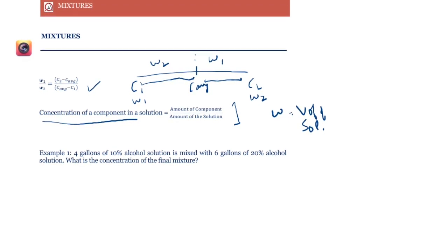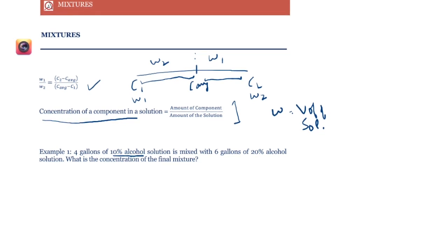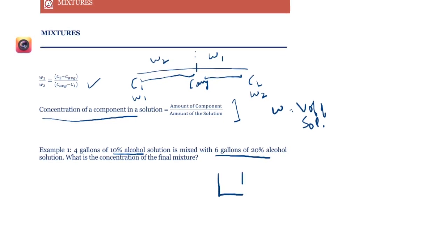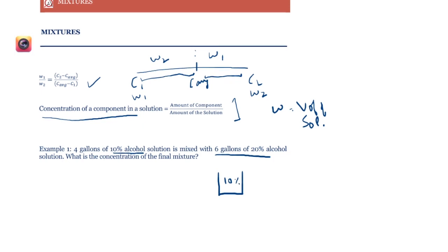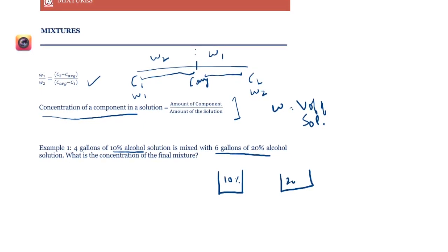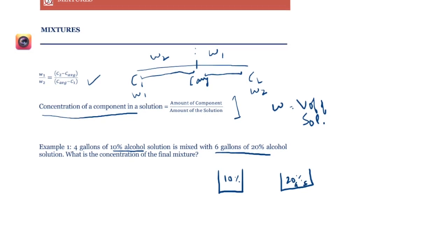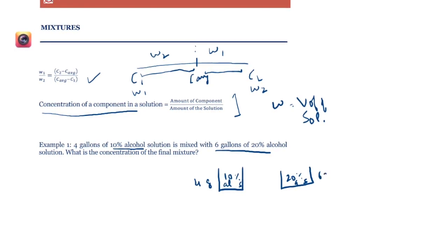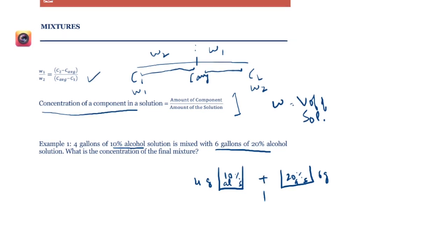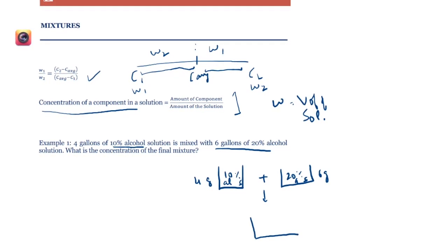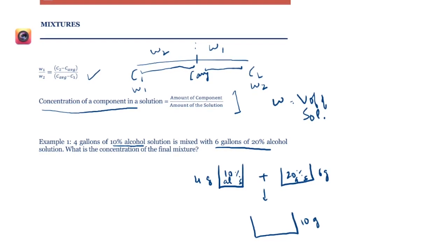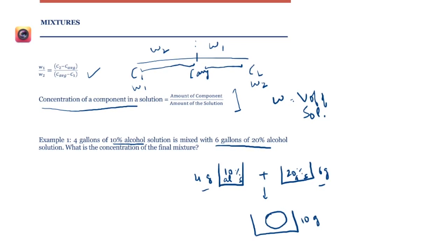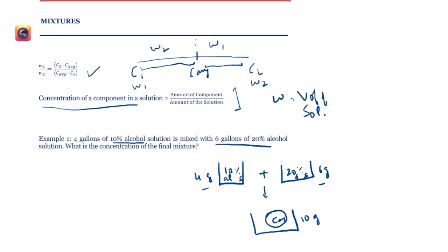We are given 4 gallons of 10% alcohol solution is mixed with 6 gallons of 20% alcohol solution. So say we have 10% alcohol solution. This is 4 gallons and this is 6 gallons. So what happens when we mix them together? First of all I can say that we get 10 gallons of total solution because 4 gallons is mixed with 6 gallons. And there is a certain concentration of alcohol over here which I don't know and I'll call it C average. So how do we get C average?